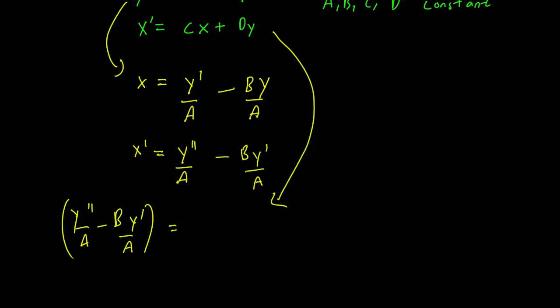equals c times x (we have the x value here, so this comes from the x value that we just derived) plus dy.